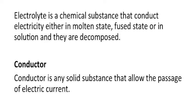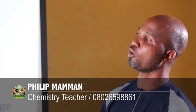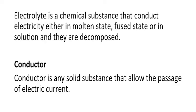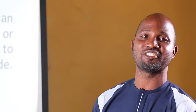The electrolyte is a chemical substance that conducts electricity either in molten state, fused state, or in solution, and they are decomposed. There are two types of electrolytes — strong and weak — depending on their degree of dissociation. Strong electrolytes dissociate completely, while weak electrolytes dissociate partially in solution. The conductor is a solid substance that allows the passage of electric current. The conductor conducts electricity in solid state via mobile electrons and does not decompose, while the electrolyte conducts electricity in molten or fused state or in solution via mobile ions and decomposes.